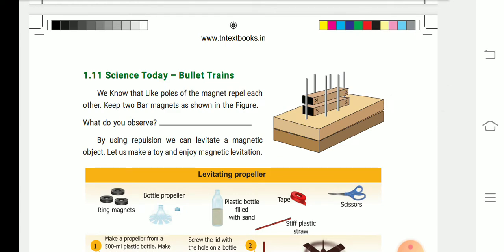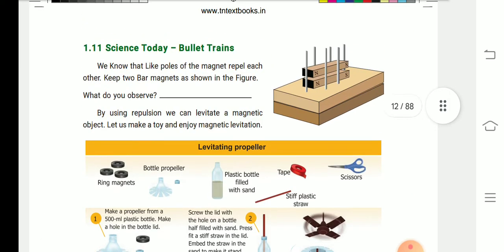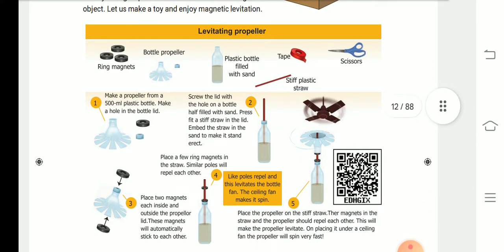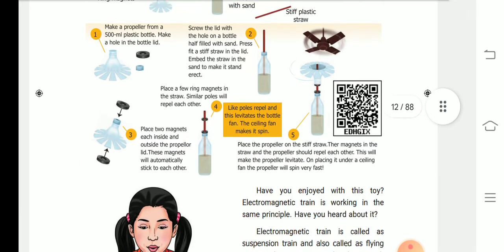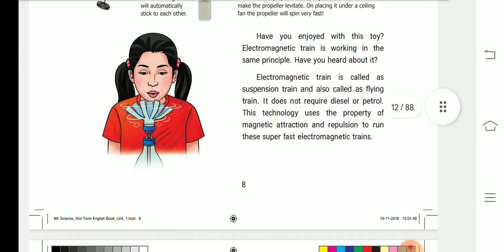Science today: bullet train. This is the experiment, levitating propeller. Do the exercise at home, children.